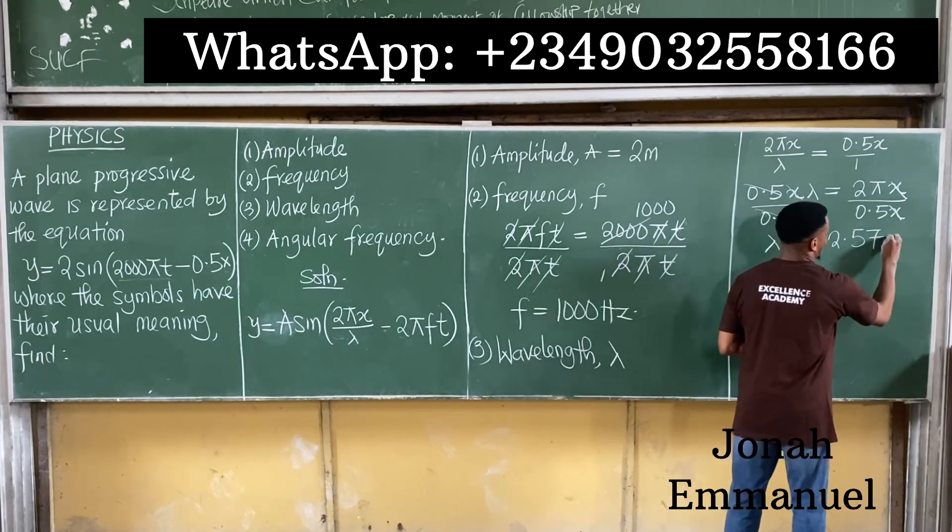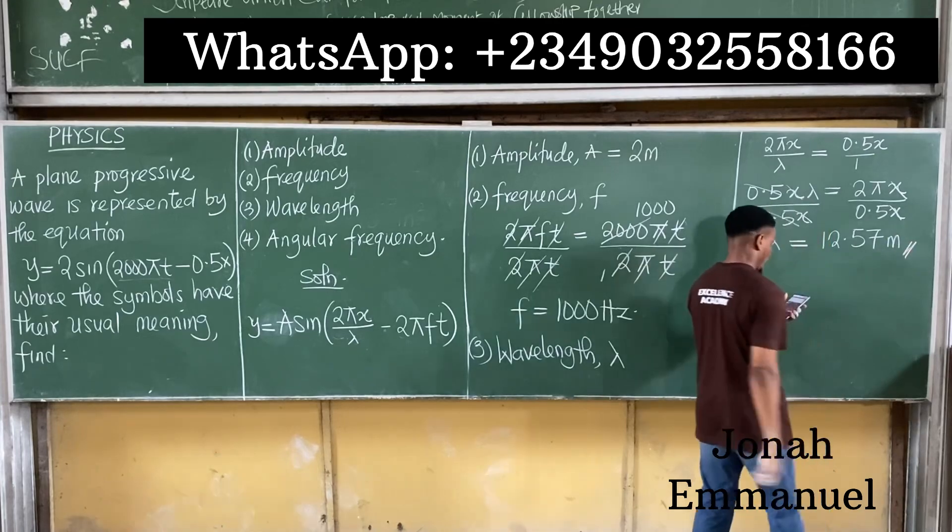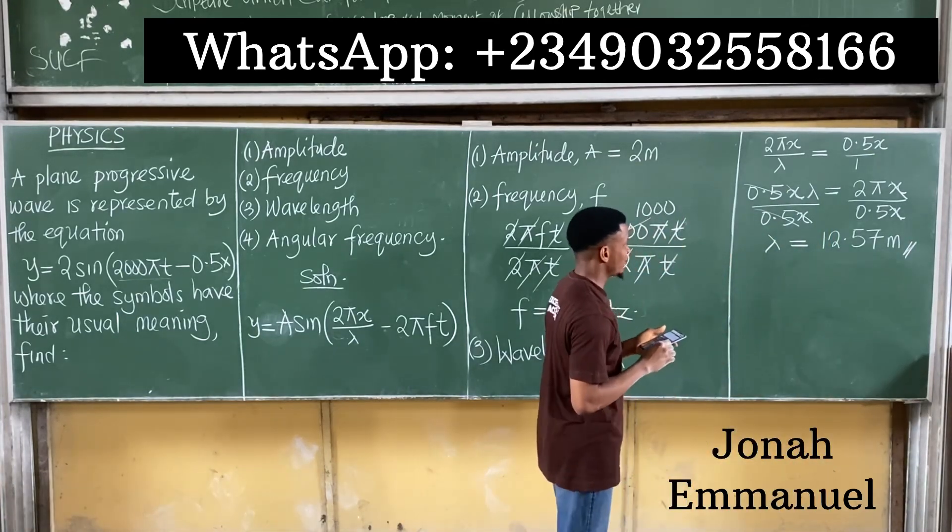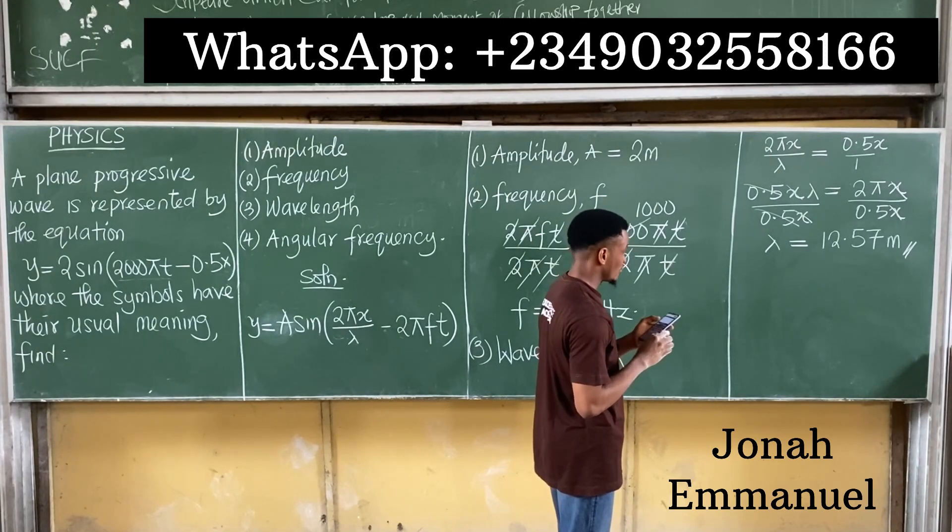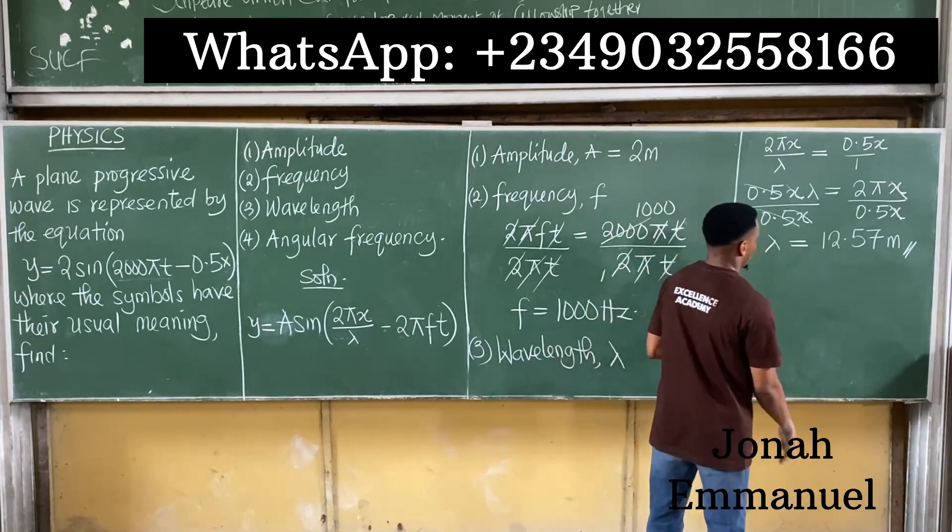So 2π divided by 0.5, you punch that, that gives you about 12.57. Wavelength is measured in meters. It becomes 12.57 meters. So you punch 2π divided by 0.5, you have that answer, 12.57. So this is how we get this value.